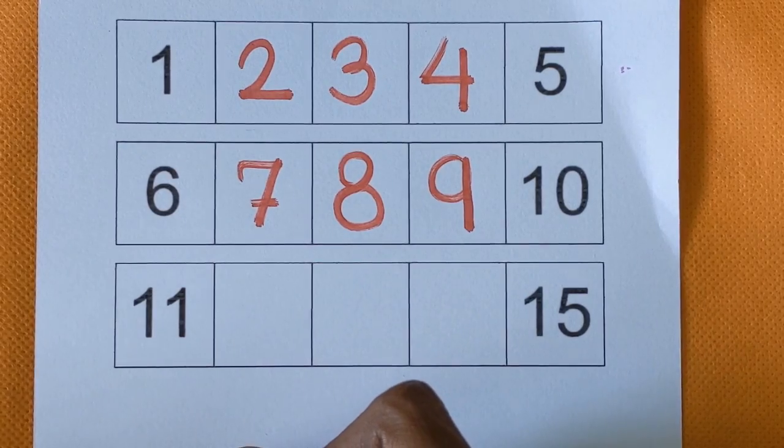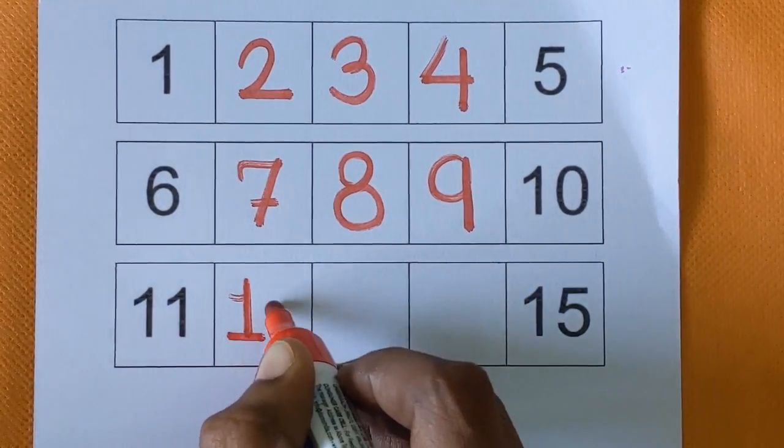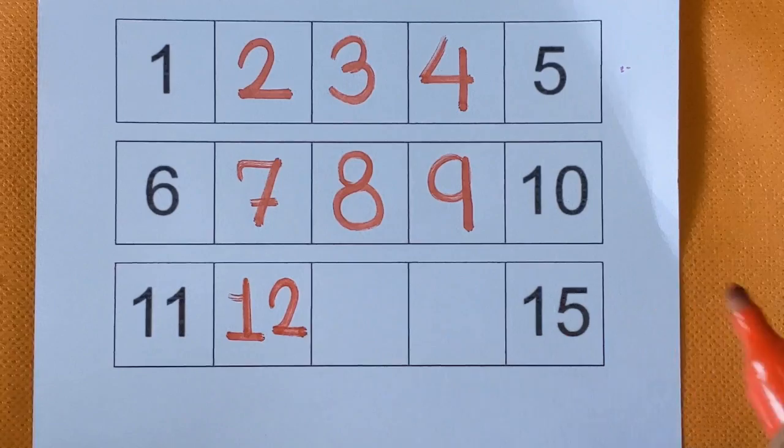After 11, which number is missing here? It's a number 12. 1, 2, 12.